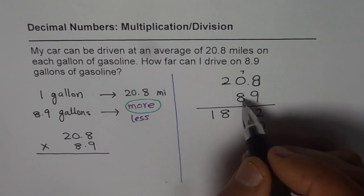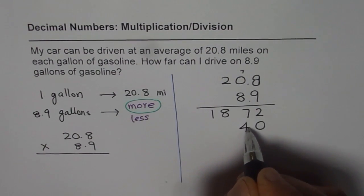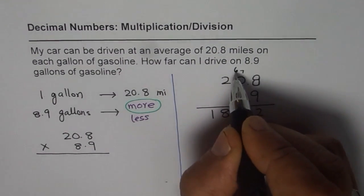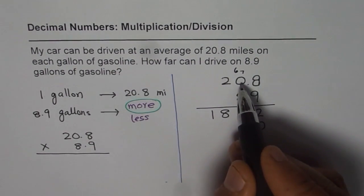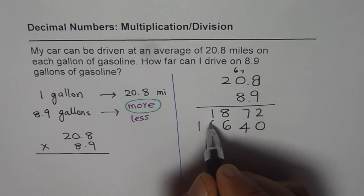So multiplying by 8. 8 times 8 is 64, so we get 4 here and 6 there. 8 times 0 is 0 plus 6, which is 6. 8 times 2 is 16, so we get 16.